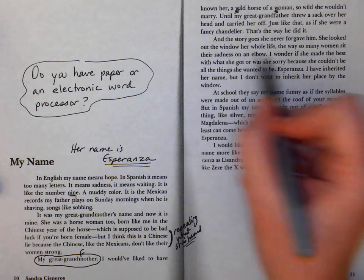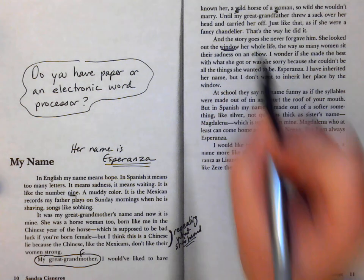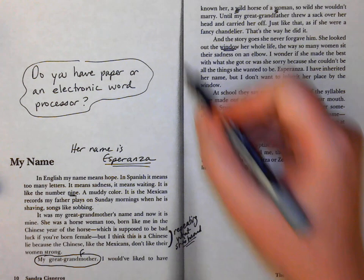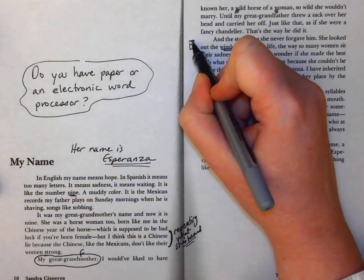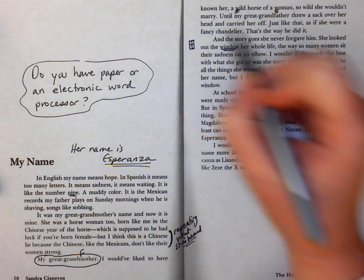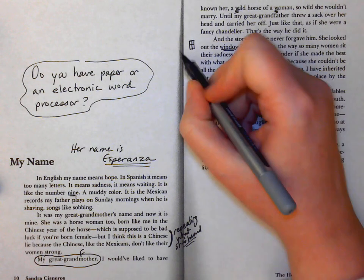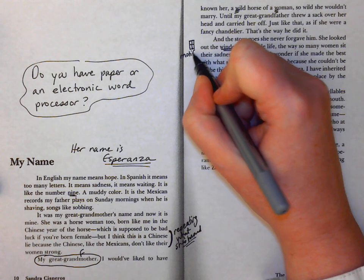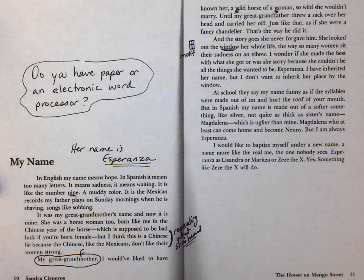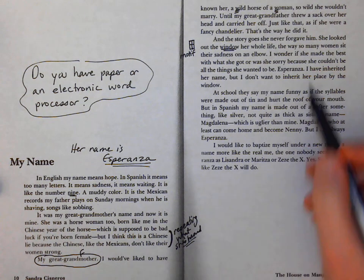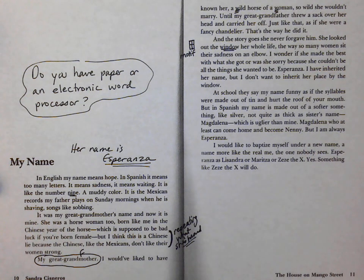I want you to notice this idea of women looking out of windows with a trapped feeling. It's actually going to show up over and over again in Mango Street. Windows as a motif, a repeating image, especially women that are trapped behind them.